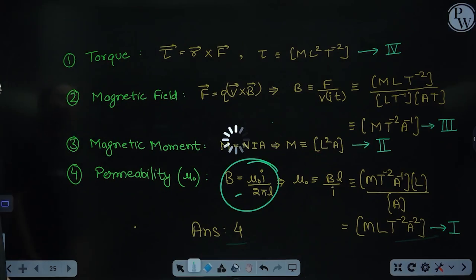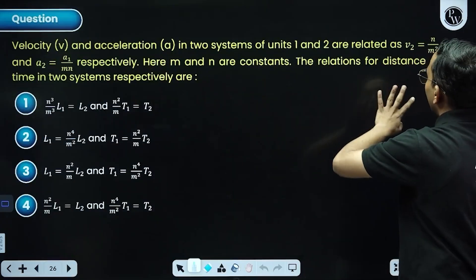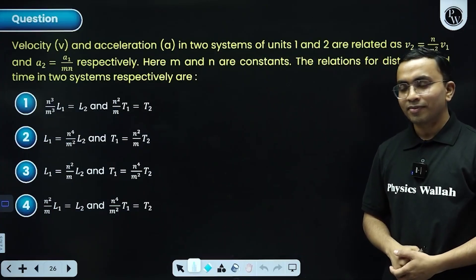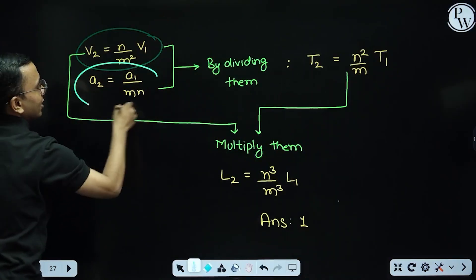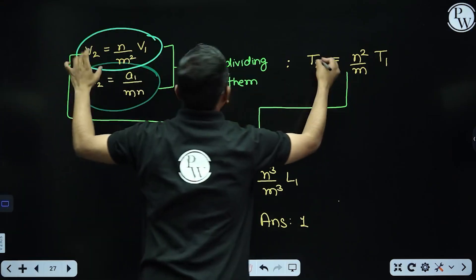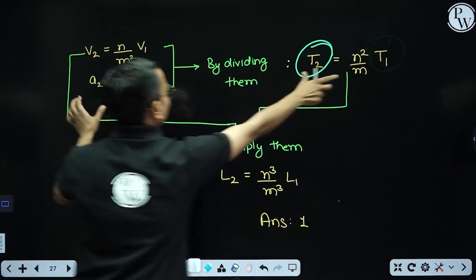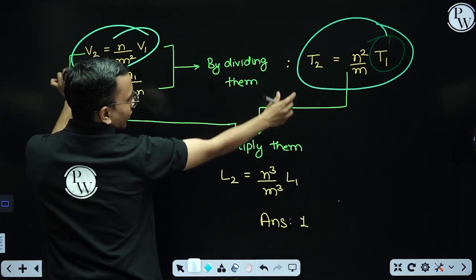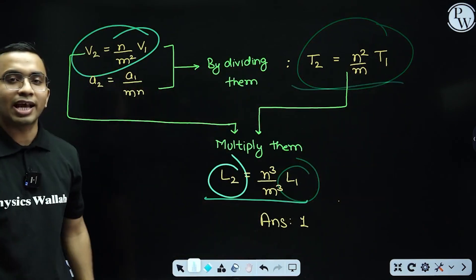Next question: velocity and acceleration in two systems of units are related by constants m and n. Find the correct relation for distance and time in the two systems. Since velocity/acceleration has dimensions of time, dividing the velocity relation by the acceleration relation gives t₂ in terms of t₁. Then, since velocity × time = length, multiplying the velocity and time relations gives the relation for lengths l₁ and l₂. The correct answer is option one.